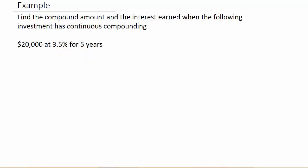Let's write our formula down. A equals P times E raised to the RT. So, we have P is $20,000. R, that's the 3.5%, so that's .035. And then, T is the number of years, which in this case is 5.